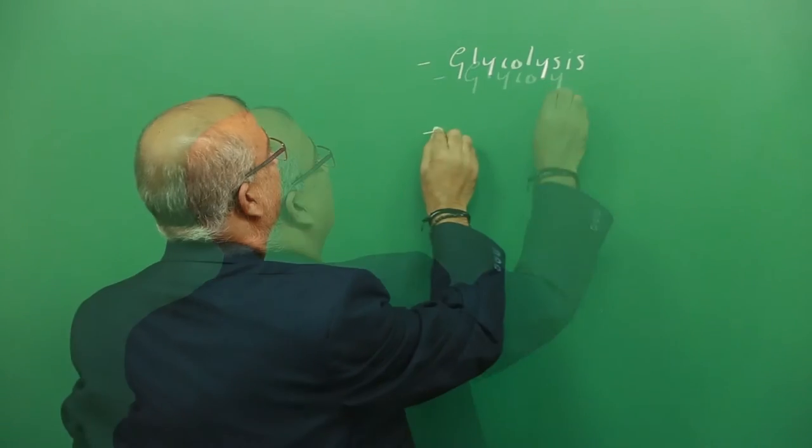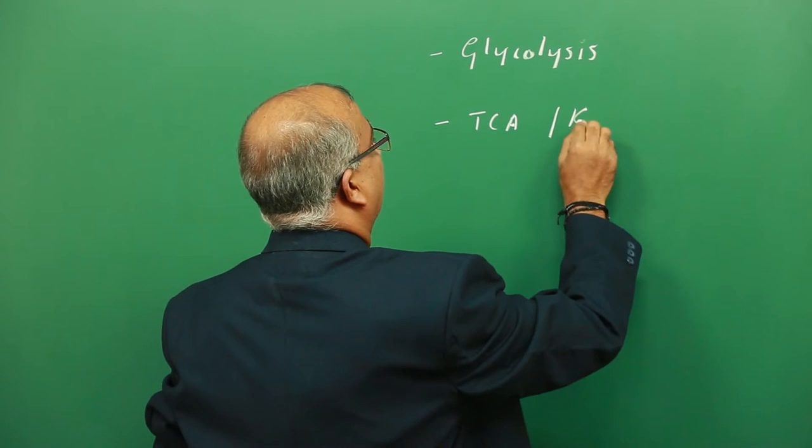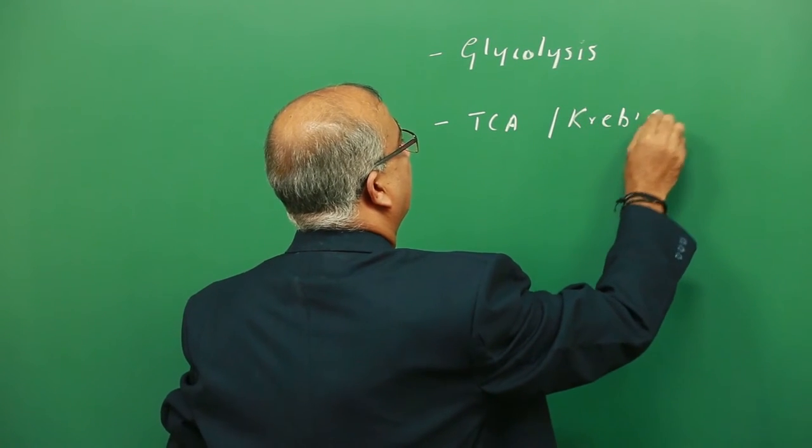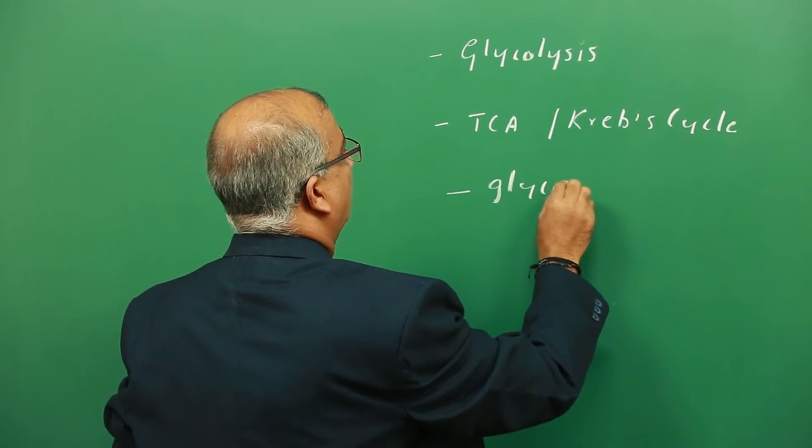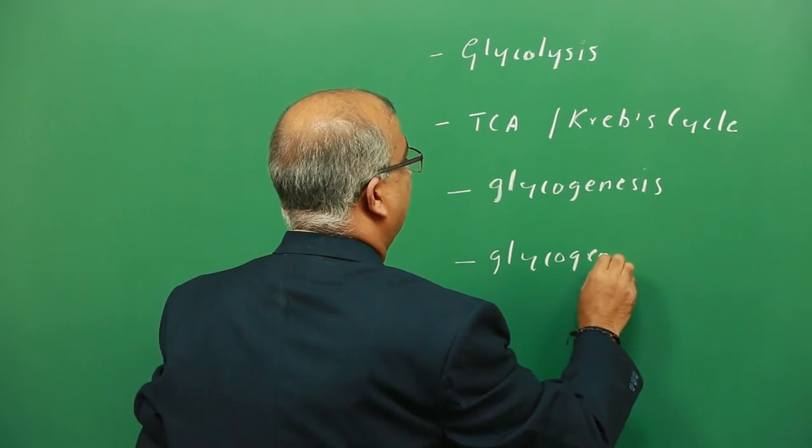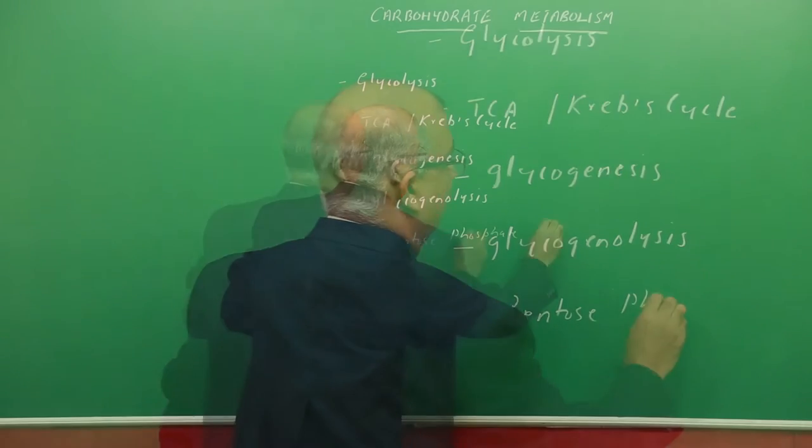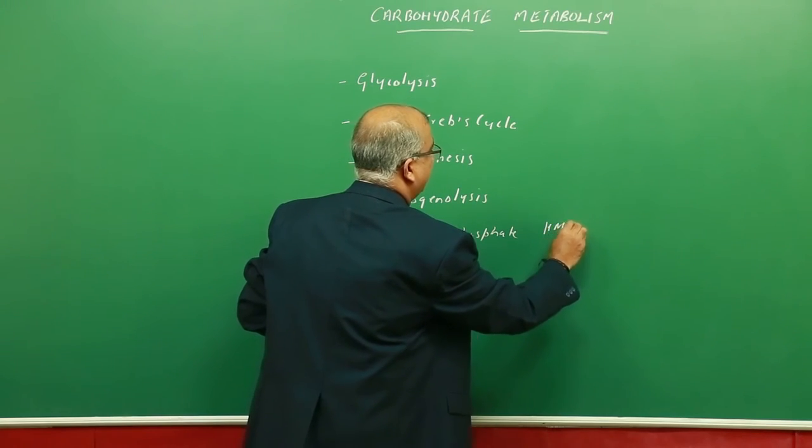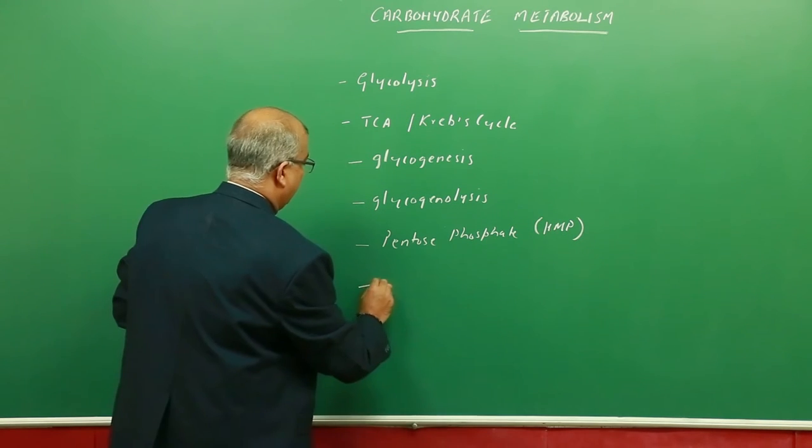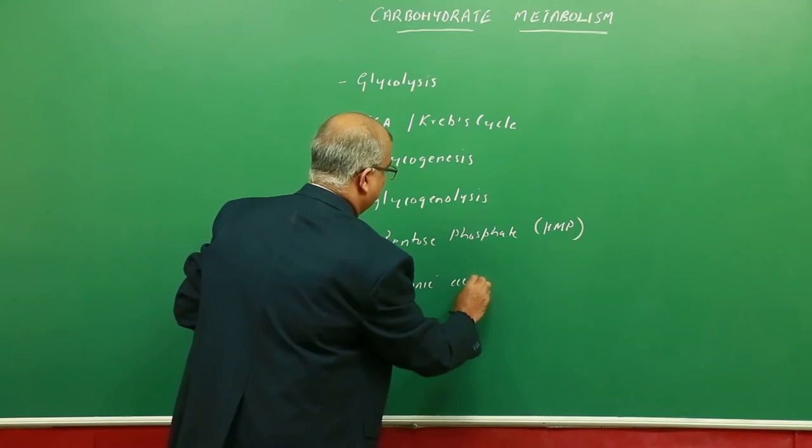These pathways include glycolysis, the TCA or Krebs cycle, glycogenesis, glycogenolysis, the pentose phosphate or HMP pathway, and the uronic acid pathway.